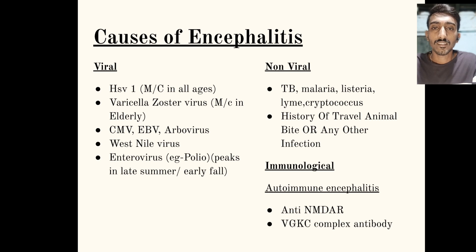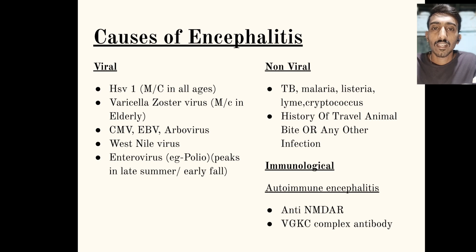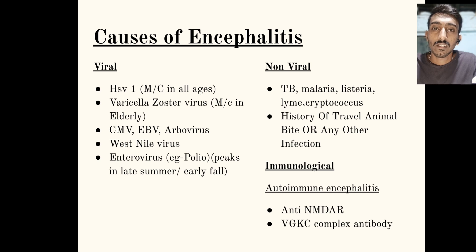The causative organisms of encephalitis — starting with viral causes — HSV1 is the most common organism, present in all ages and all seasons. Others include varicella zoster (most common in the elderly), cytomegalovirus, Epstein-Barr virus, arboviruses, West Nile virus, and enteroviruses like polio, which peaks in late summer and early winter.